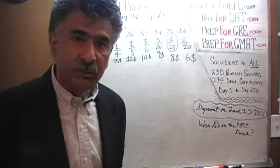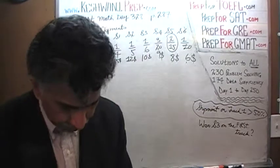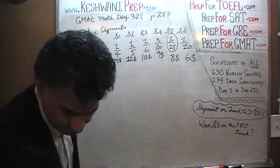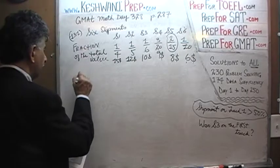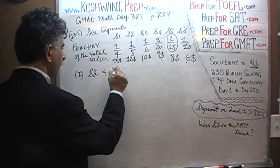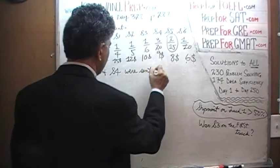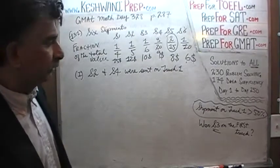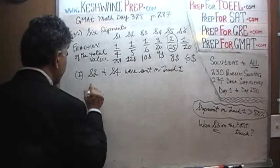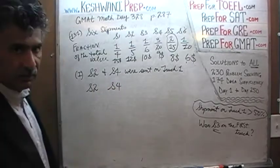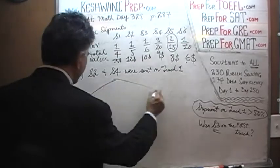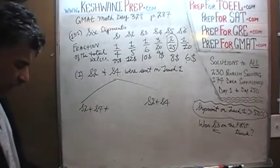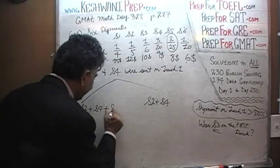Now the question is: was S3 sent on the first truck? Let's find out. Statement 1 tells us that the 2nd shipment and the 4th shipment were sent on truck number 1. The question is: was the 3rd shipment also sent on the first truck? Let's put this as two possible scenarios — S2 plus S4 are on truck 1, so what else can we put there? Is it possible to have S3 there?